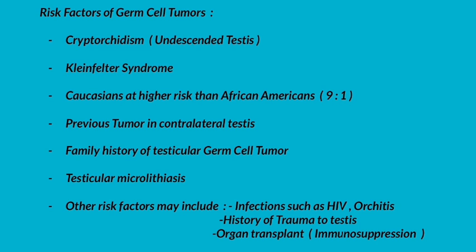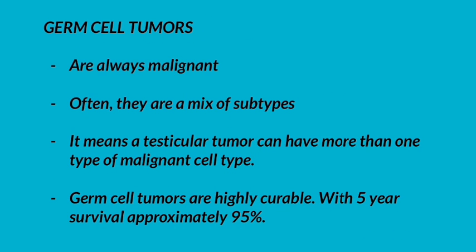Other risk factors may include infections such as HIV, history of trauma to the testis, and organ transplant, which means immune suppression. Germ cell tumors are always malignant and often a mix of subtypes, meaning a testicular tumor can have more than one type of malignant cell type. Germ cell tumors are highly curable with five-year survival of approximately 95 percent.